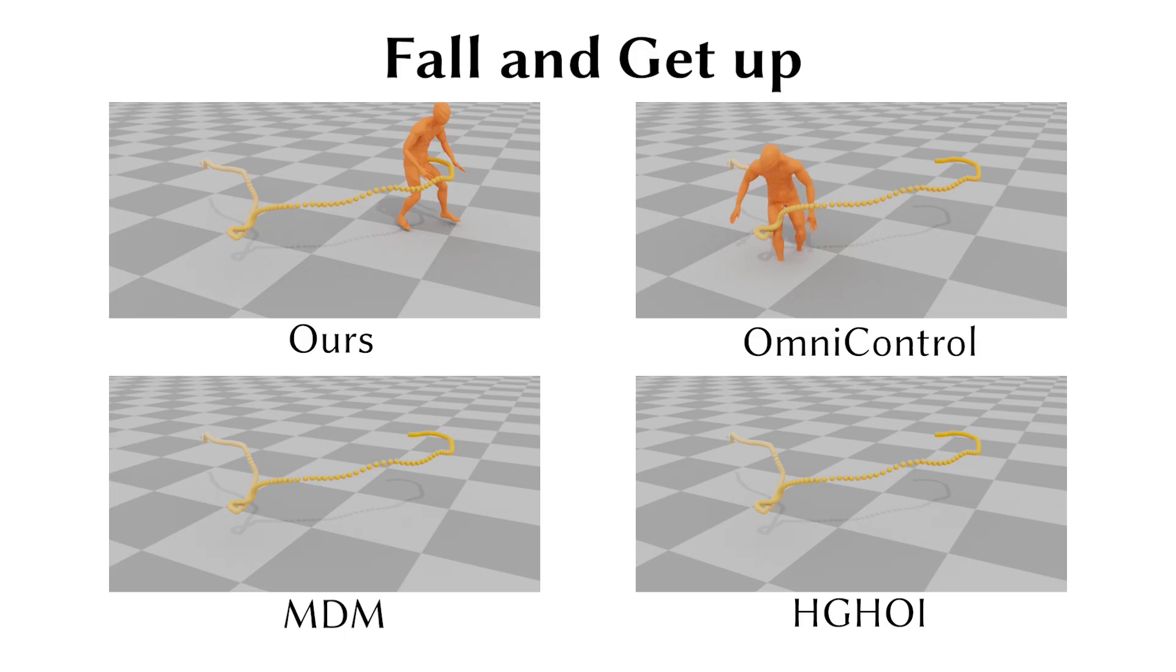Omni-Control also generates results with little floating and penetration, but it exhibits unnatural turning when getting up. In contrast, MDM and HGHOI ignore the height change, resulting in significant floating and penetration.